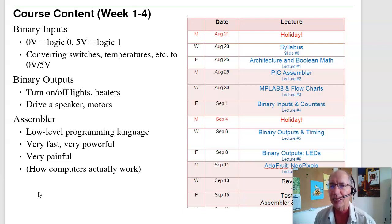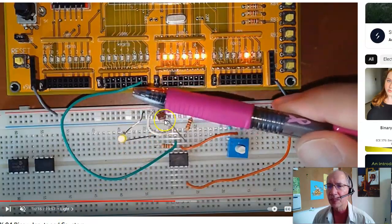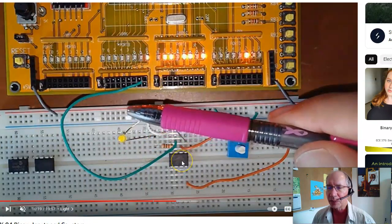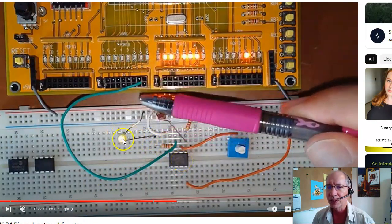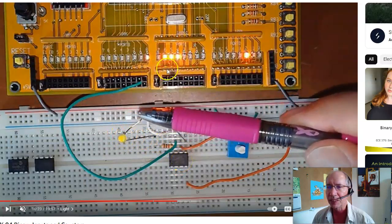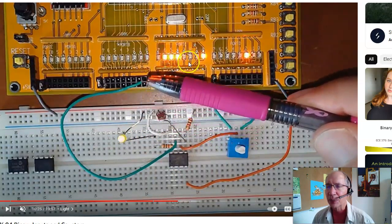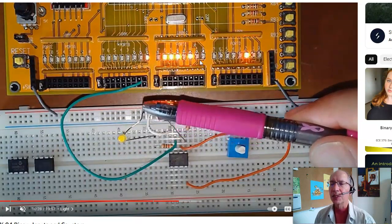I'll have binary outputs — I can turn on and off lights, heaters, drive speakers, and motors. For example, here is a light sensor tied to an op amp to convert the light level to 0 or 5 volts. You can see with the LED, and a counter — right here it's counting in binary how many shadows appear. This is one thing you'll be able to do.